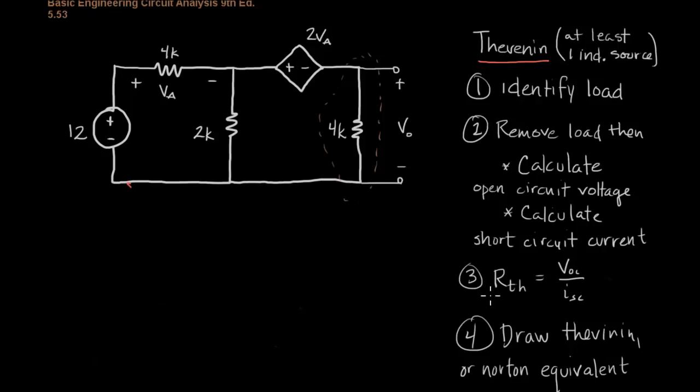This is when we have at least one independent source and one dependent source, this is the only way to calculate R_Thevenin.